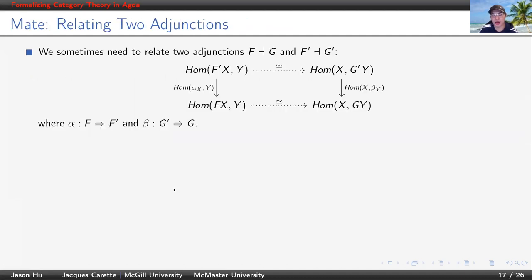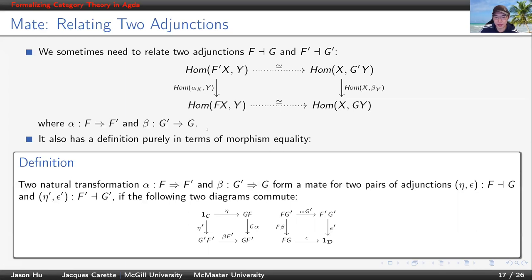So now we have the definition of adjunction. The next step is to relate two adjunctions. Consider this diagram here with two adjunctions that are related, F and G, F prime and G prime. And these two natural isomorphisms express the adjunctions. And these two adjunctions are related by two natural transformations, alpha and beta. If this diagram commutes, we say that alpha and beta form a mate. Obviously, these definitions also involve hom-sets.